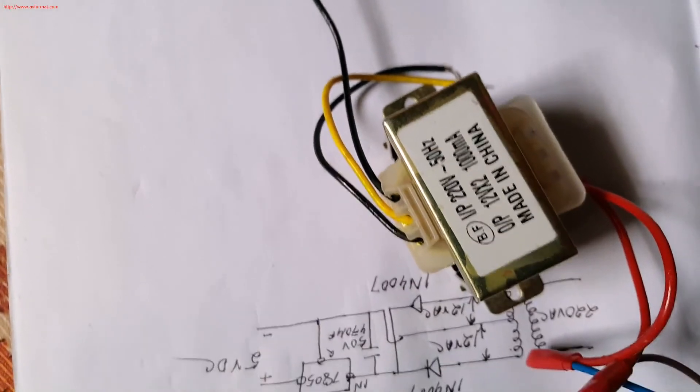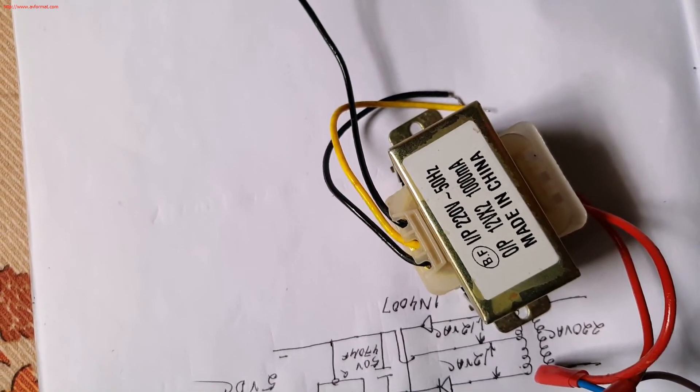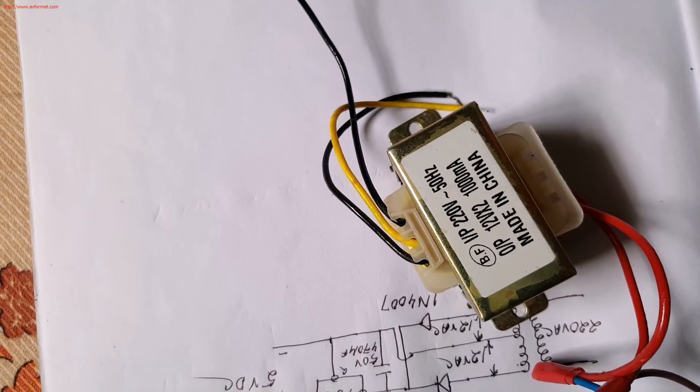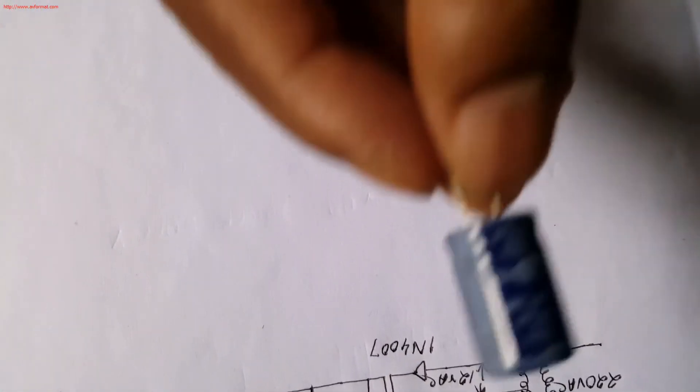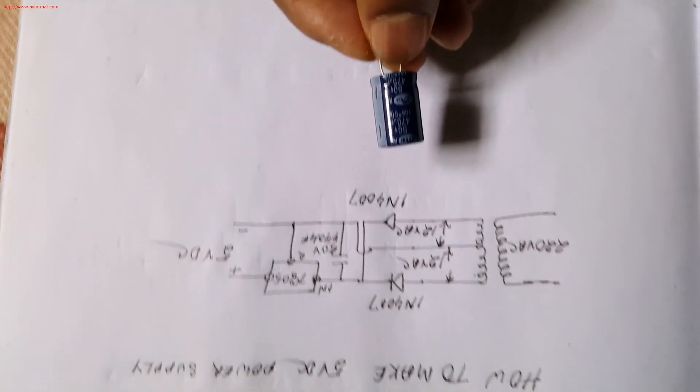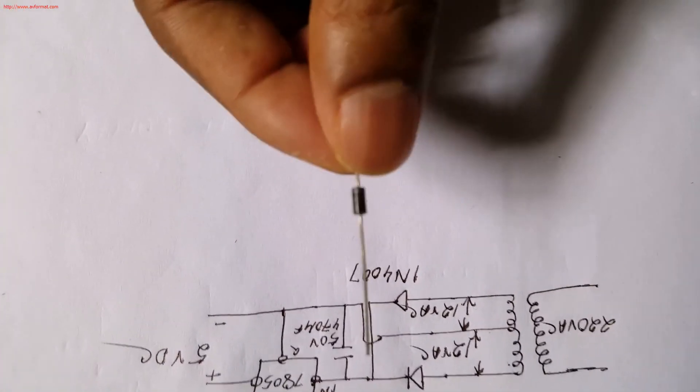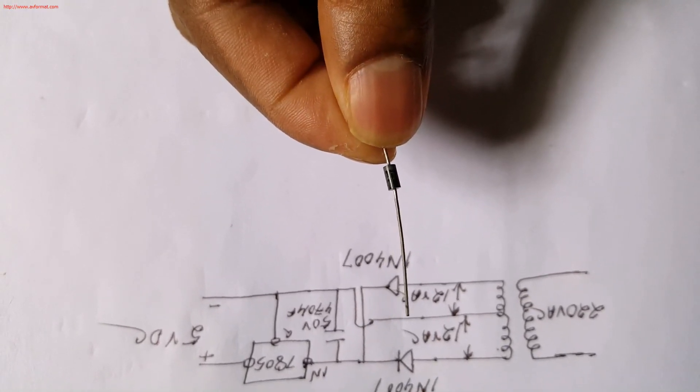This is center tap transformer 220 volt 50 Hertz and 12 volt output thousand milliampere, and capacitor is here I have used 470 microfarad, and diode we have used this is diode 1N4007.